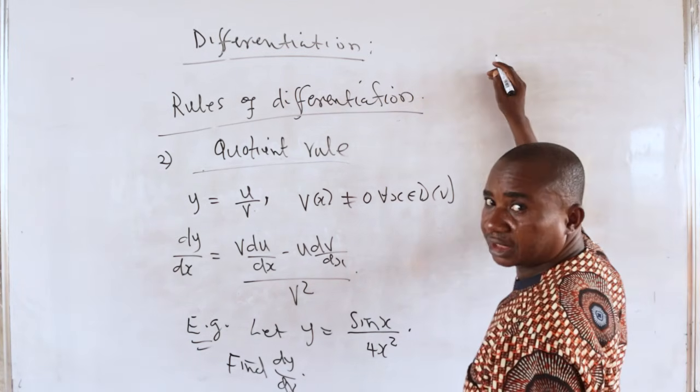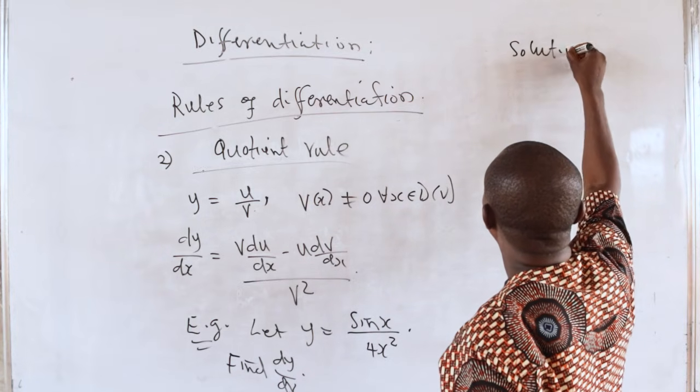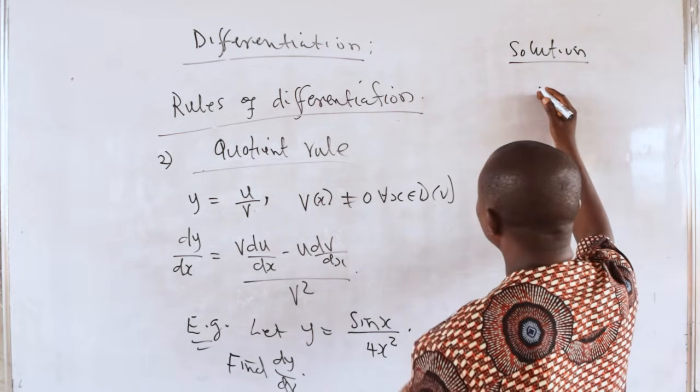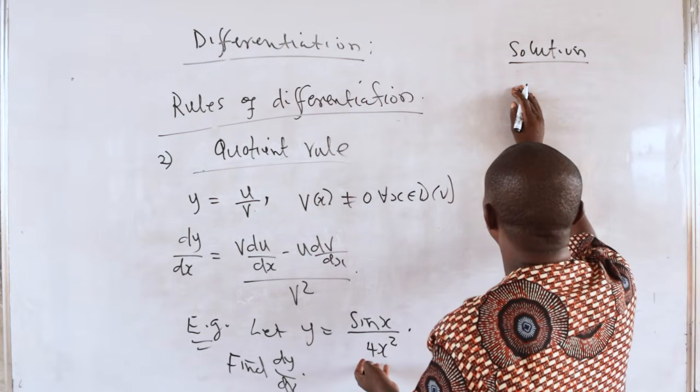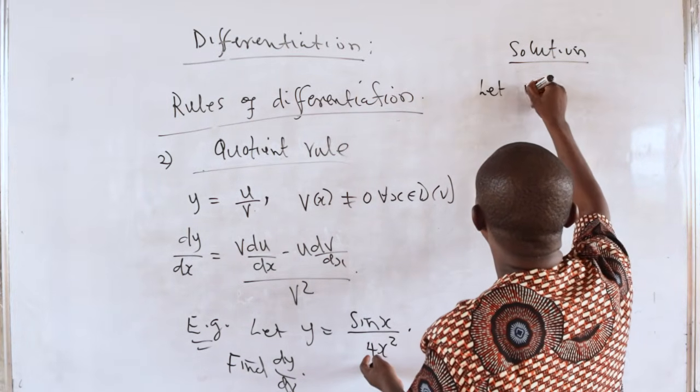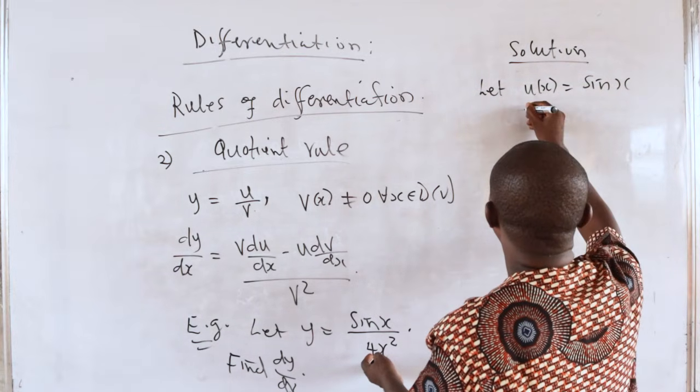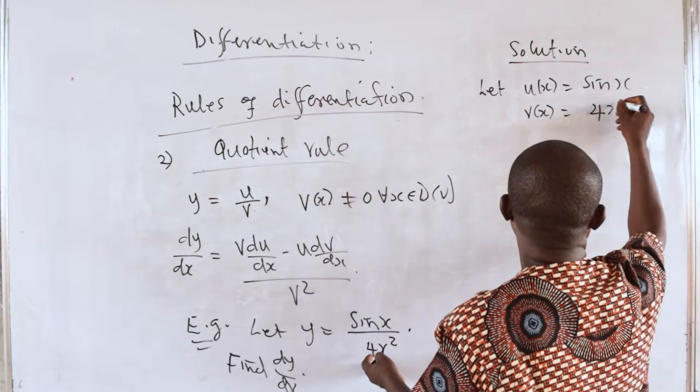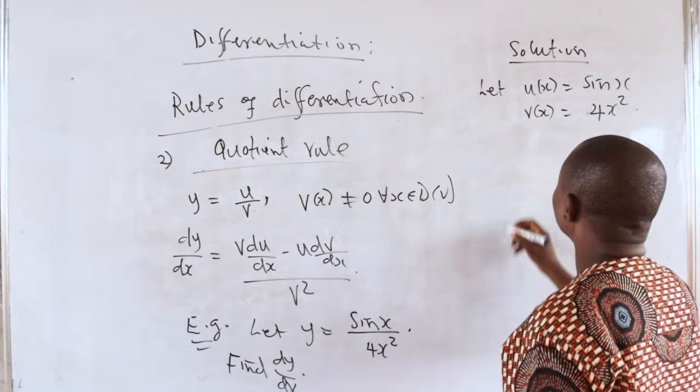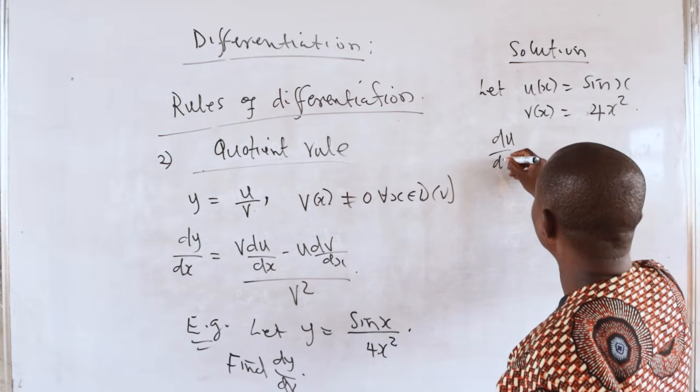To find the derivative of y with respect to x, we simply apply the quotient rule. First we identify who our u is and who our v is. We take u of x to be sin x, and v of x to be 4x². We can differentiate u of x with ease, we know how to do that.